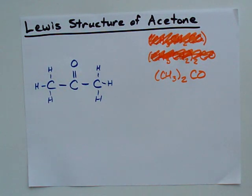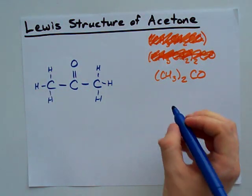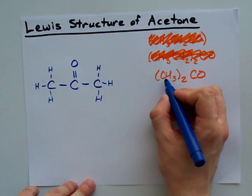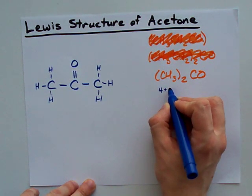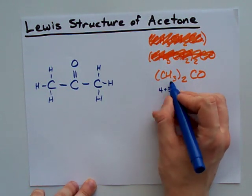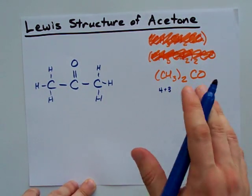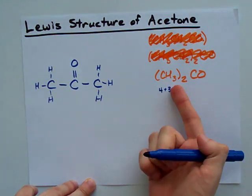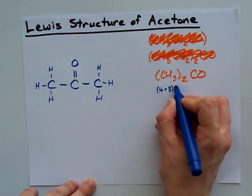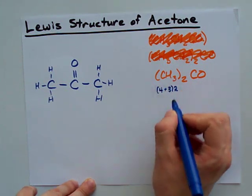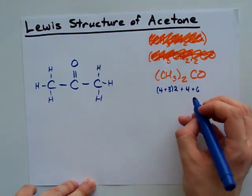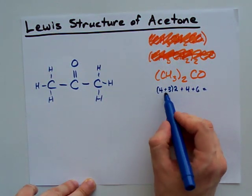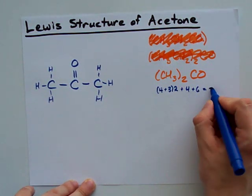Now in terms of the number of electrons we need here, because it is a Lewis structure after all, each carbon brings four electrons with it, and each hydrogen brings one. So four for the carbon and three for the hydrogens. And I have two of those CH3s, plus another four for this carbon, plus another six for this oxygen, which makes a total of 24 electrons.